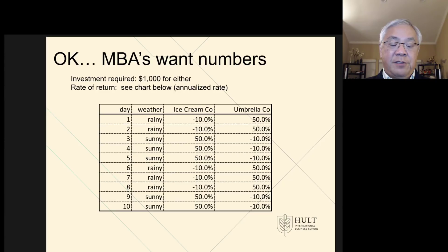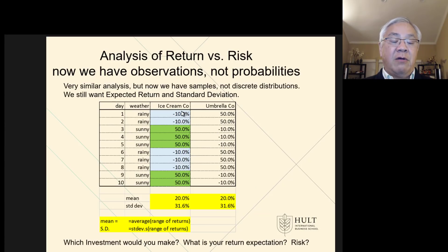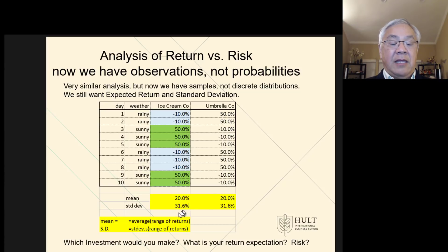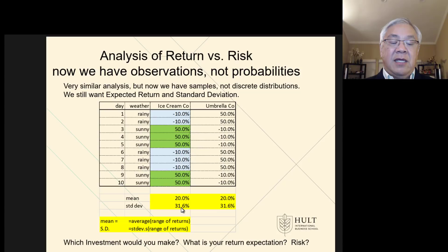Let's move to some investment analysis. We already know how to establish the expected value. Each day is independent, so we just take the mean or the average of those, and we get 20%. We take the average of the umbrella — it's also 20%. And the standard deviation is very large for both of them: 31.6. So one standard deviation is 20% minus 31%, which is negative 11%, or 20% plus 31%, which is 51% profit. That's what mean and standard deviation is.